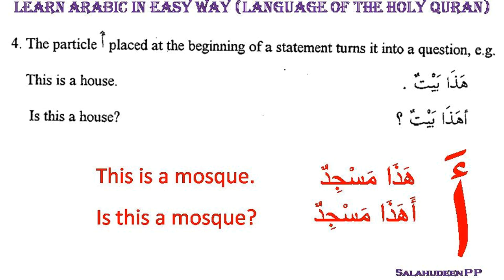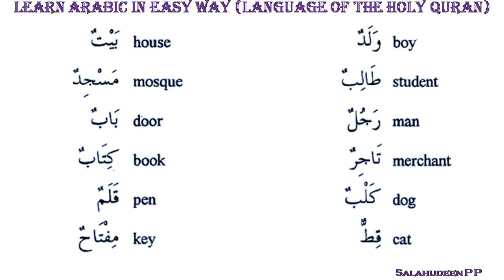In this first lesson, we can also learn some vocabulary. Baytun — house. Masjidun — mosque. Babun — door. Kitabun — book. Qalamun — pen. Miftahun — key. Waladun — boy. Talibun — student. Rajulun — man. Tajirun — merchant.